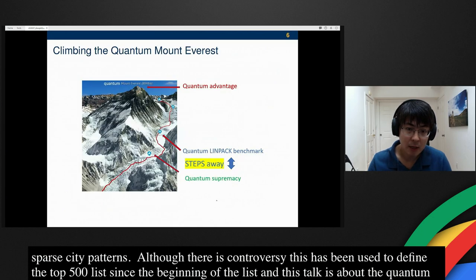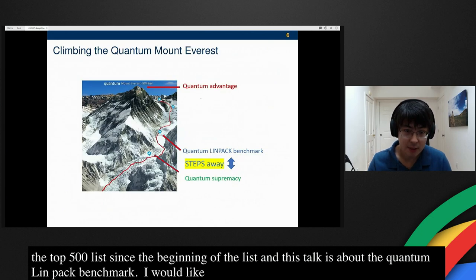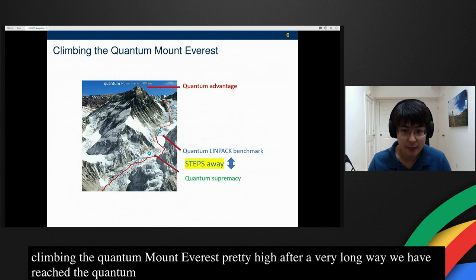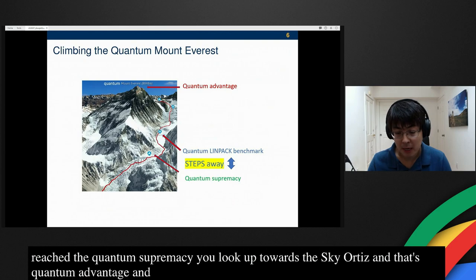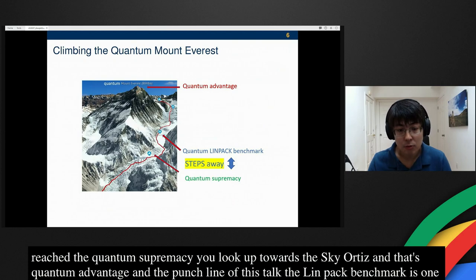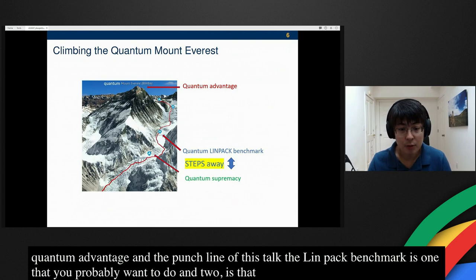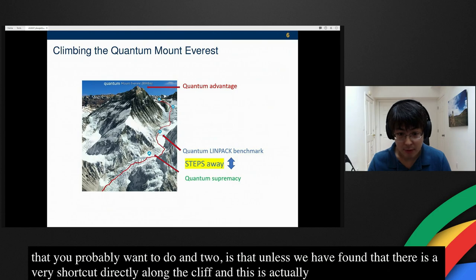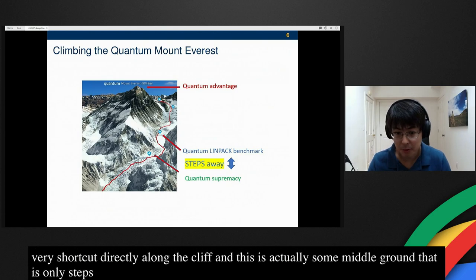I would like to think about quantum advantage. It's like we're climbing the quantum Mount Everest. After a very long way, we have reached the so-called quantum supremacy. You look up towards the sky and that's quantum advantage. The punchline of this talk is that the quantum LINPACK benchmark is something that you probably want to do. And unless we have found that there is a very short cut directly along the cliff, this is actually some middle ground that is only steps away from Google's quantum supremacy test.